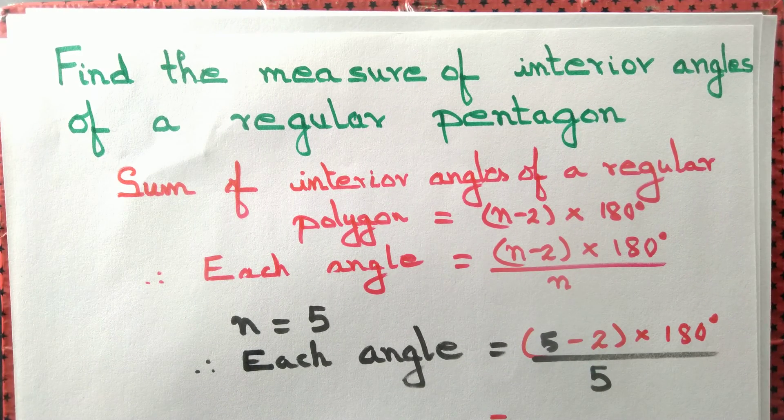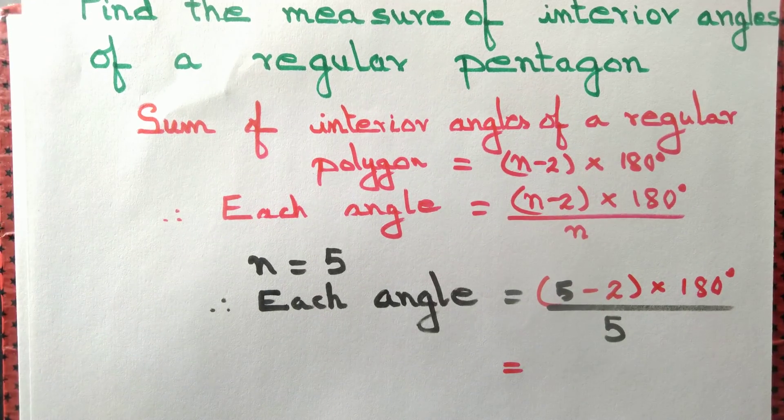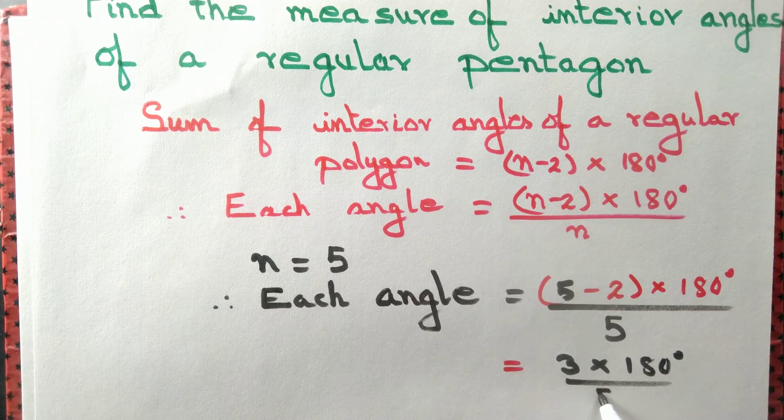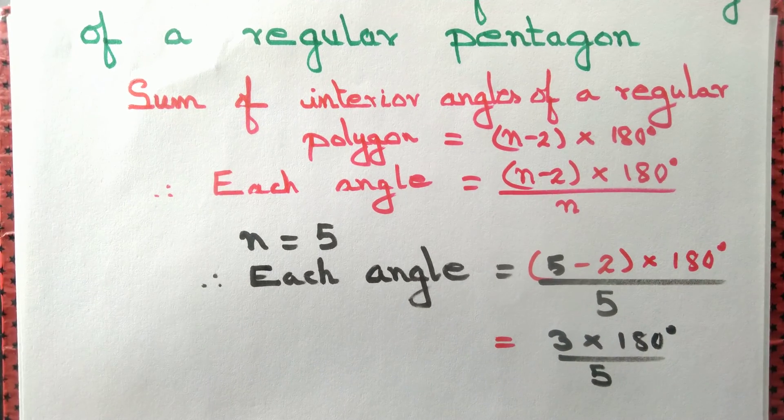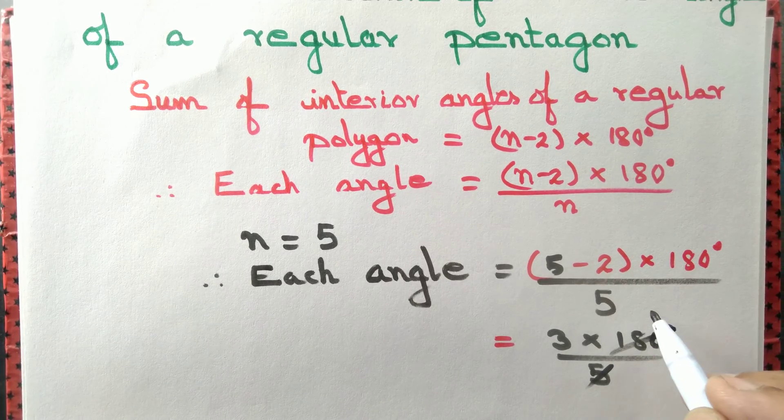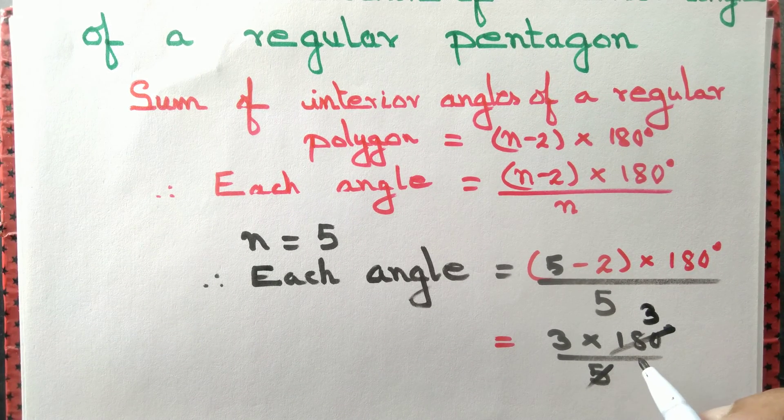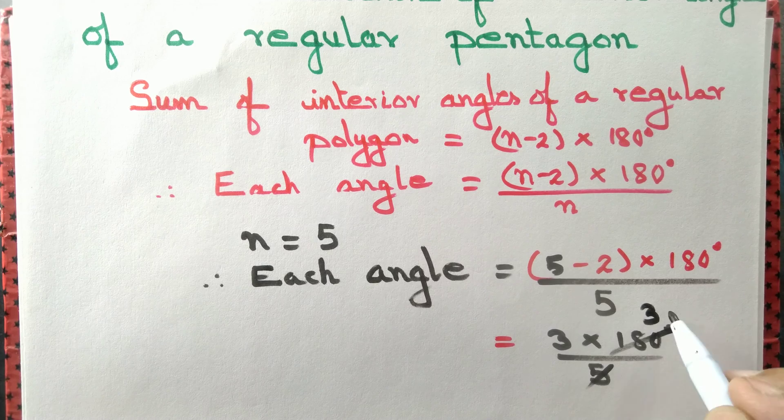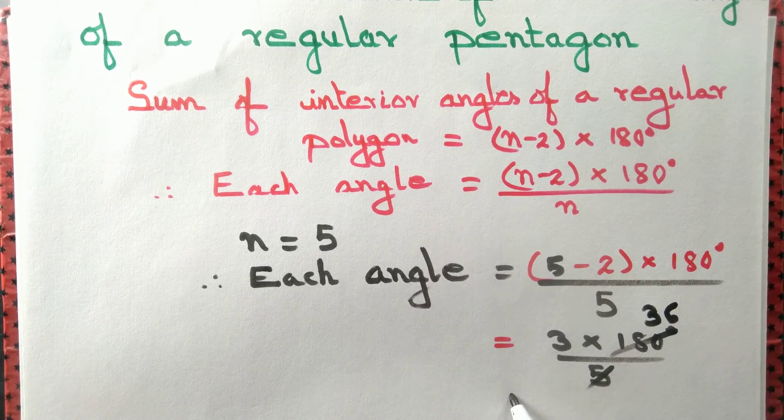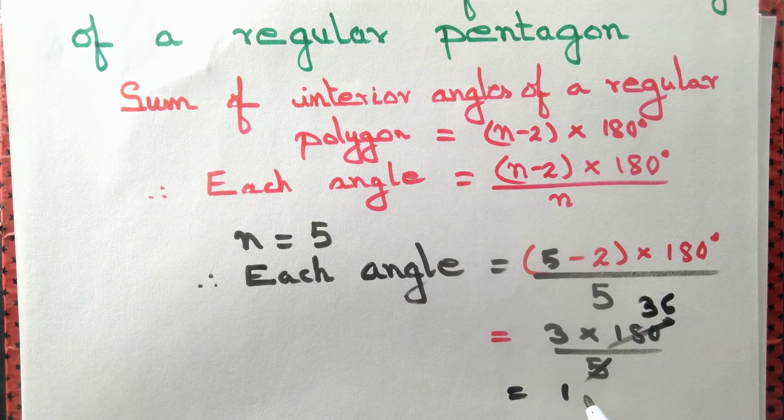Now 5 minus 2 is 3, so this equals 3 × 180° / 5. Now we can cancel it out. 5 into 3 is 15, you'll be left with 36. 36 times 3 is 108°.